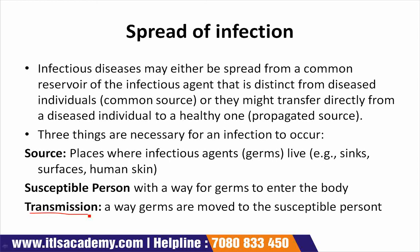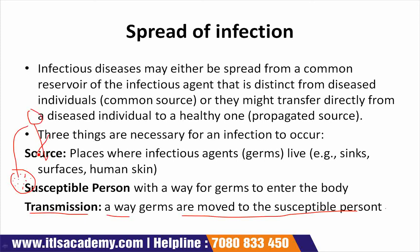The third necessary element is transmission — the way germs are moved to the susceptible person. If germs are situated in a particular source, they will transfer to a susceptible person by a process of transmission. The process by which germs travel from source to susceptible person is known as transmission.